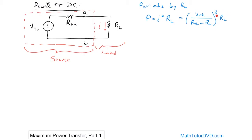If you take the other extreme and choose infinity — the largest possible resistance — the bottom of the fraction goes to infinity, so the entirety of the fraction goes to zero, chopping everything down. When you choose infinity for a load resistance, everything goes to zero. So no matter which end of the spectrum — zero or infinity — you get zero watts delivered to the load. There clearly has to be some happy medium somewhere in the middle where you get maximum power transfer.